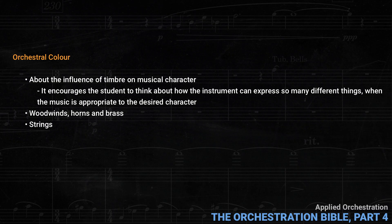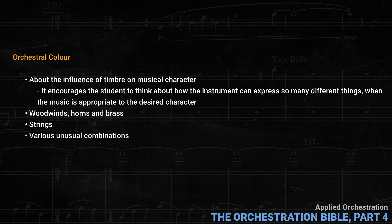Then he goes on to strings, and he talks about pizzicato, mutes, double stops, harmonics, tremolos, ponticello, col legno, as well as just using a few solo players. Again, the point is not just to list the possible effects, but to really understand how they influence the character of the music in the various repertoire examples. After discussing the strings, he goes on to various unusual combinations, including harp, organ, piano, mandolin, guitar, celeste, and percussion.